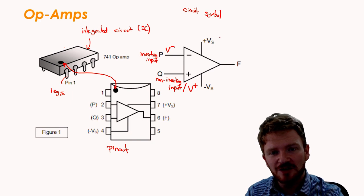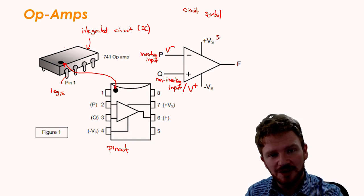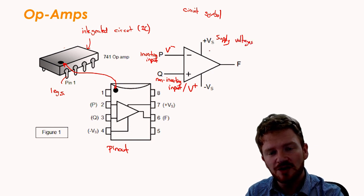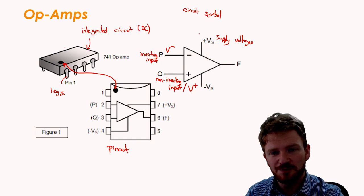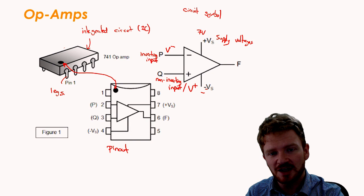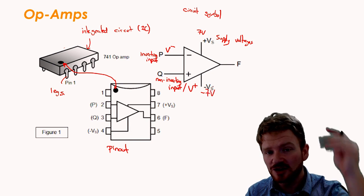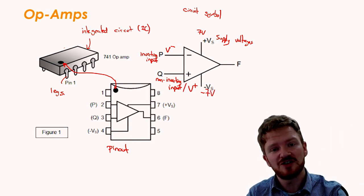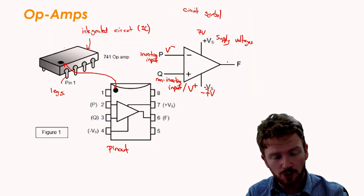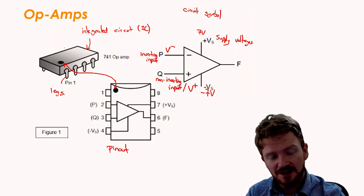Connected kind of halfway down the sides of this triangle, we have the supply voltages. Usually, the magnitude of them are both the same. For instance, I may have 7 volts and negative 7 volts. Usually, the magnitude is the same. They just have opposite signs. Not always, though.